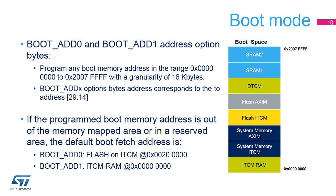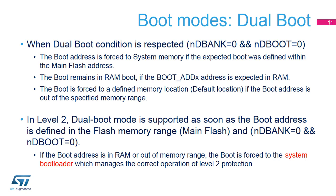If the programmed boot memory address is out of the memory mapped or reserved area, the default boot fetch address is Boot ADD0 at ITCM flash 0x00200000 and Boot ADD1 at ITCM RAM 0x00000000. When the dual boot condition is respected, the STM32 boots from system memory if the expected boot address is defined within the main flash address; it boots from RAM if the boot address is defined in RAM. If neither condition is valid, the boot is forced to the default memory location. Dual boot mode is supported even when the STM32F7 is protected with readout protection level 2.